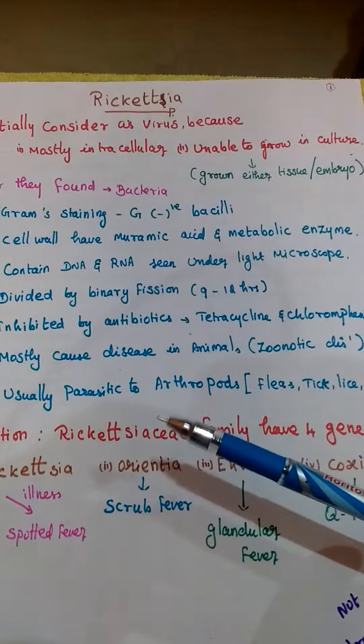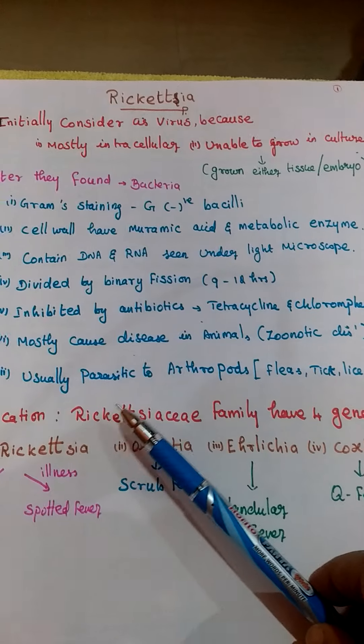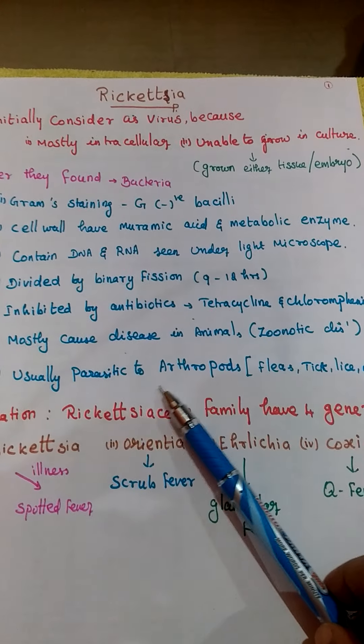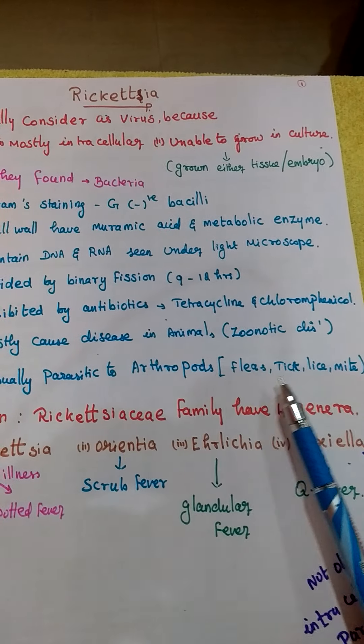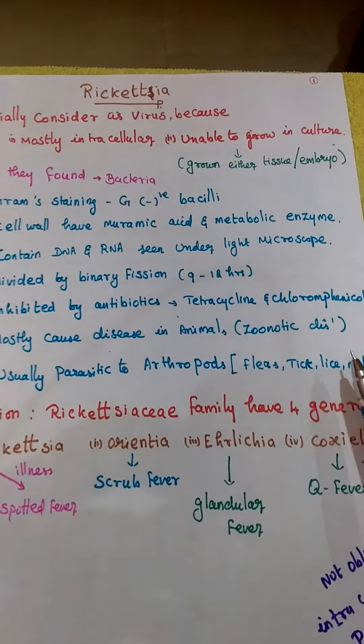Mostly, rickettsia causes zoonotic diseases. It is usually parasitic to arthropods — fleas, tick, lice, mite, etc.